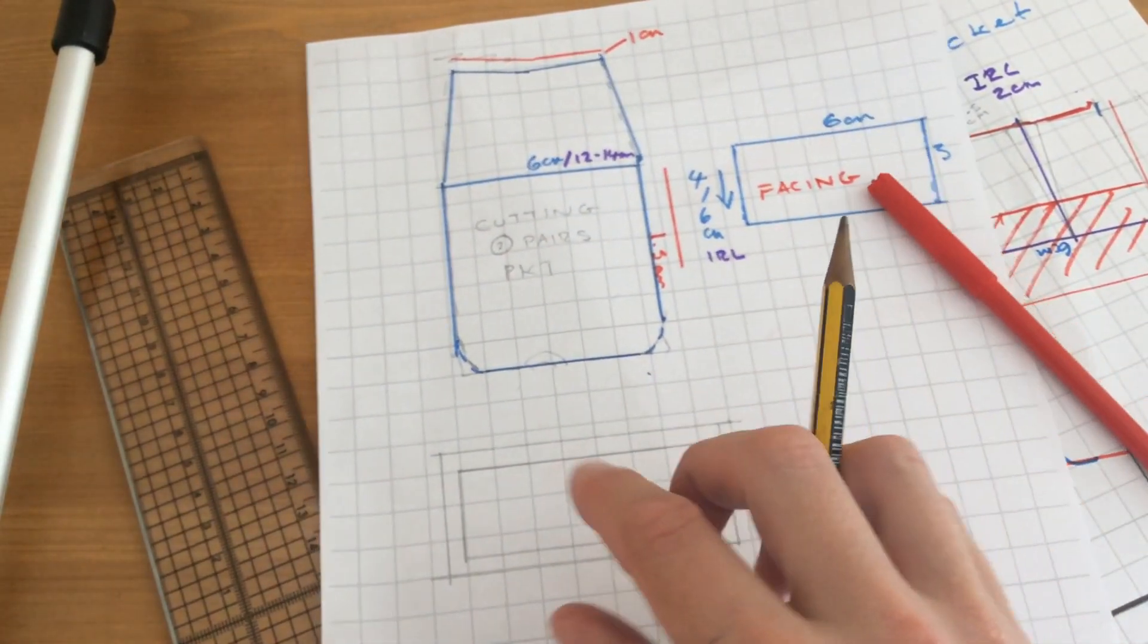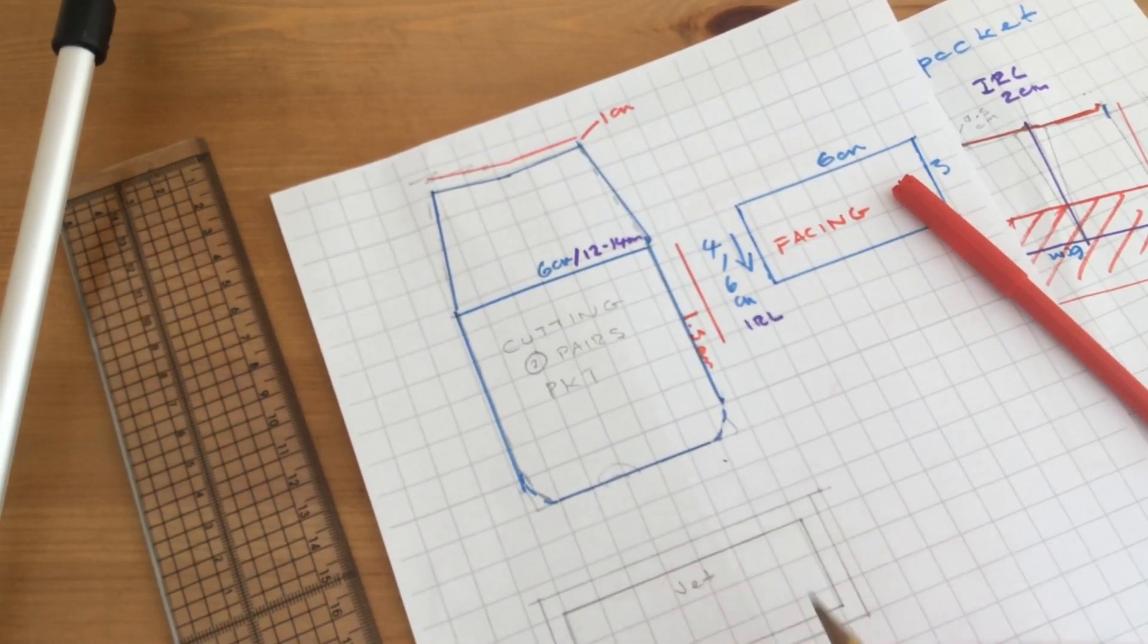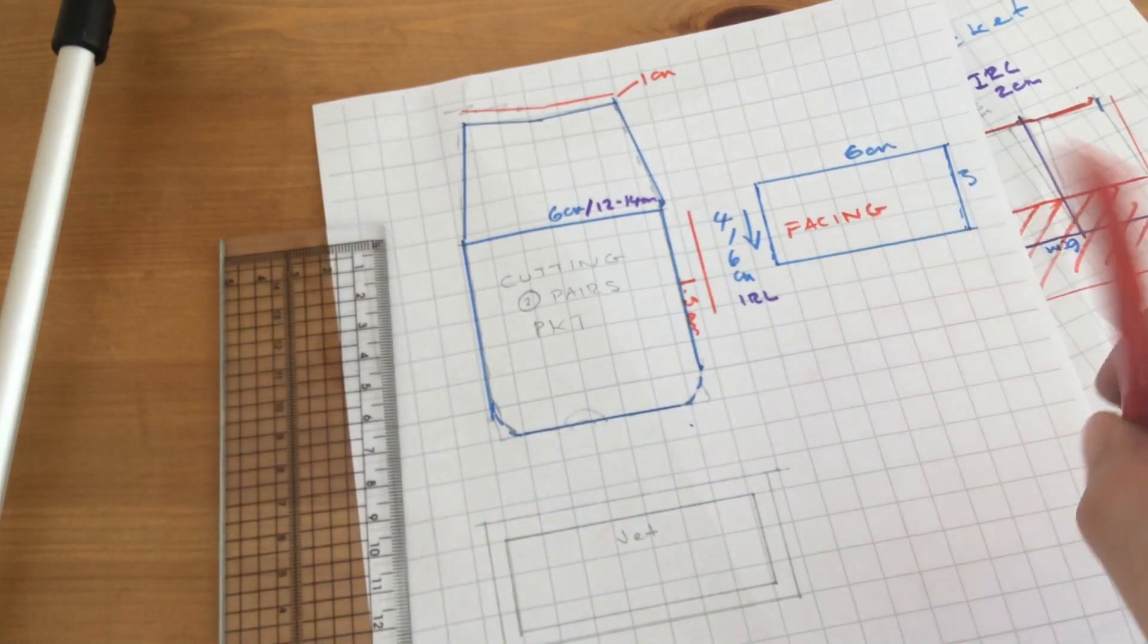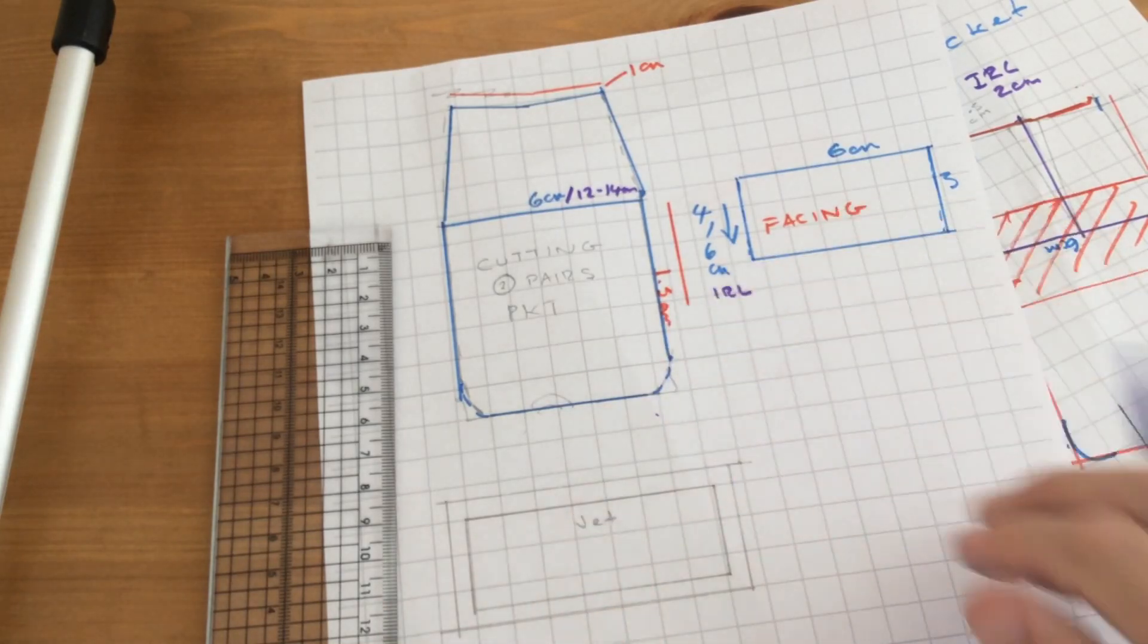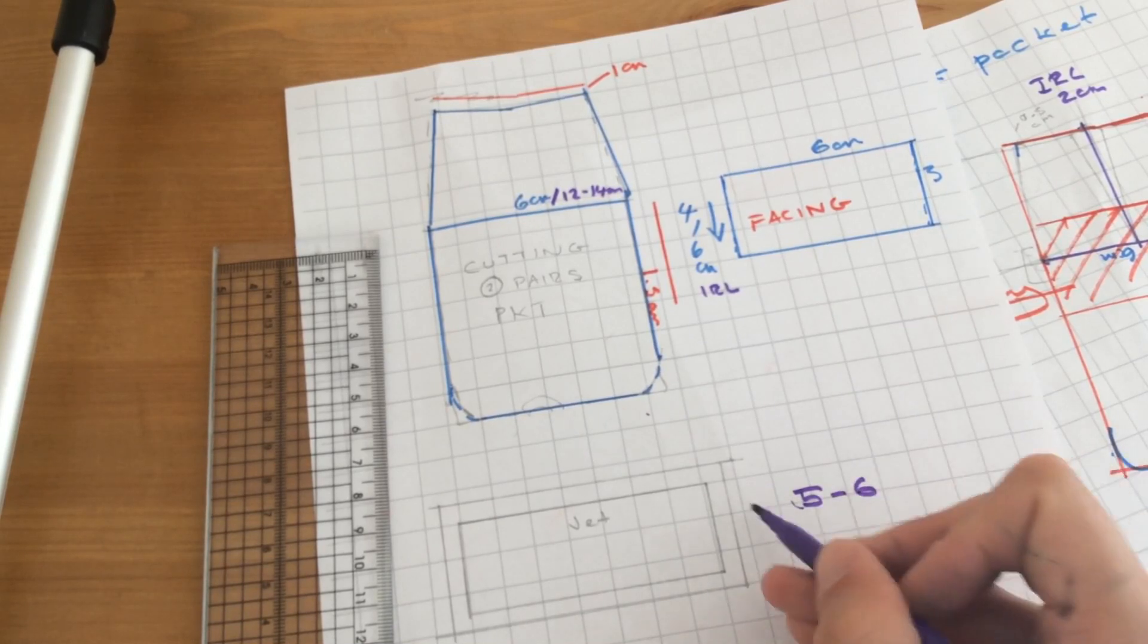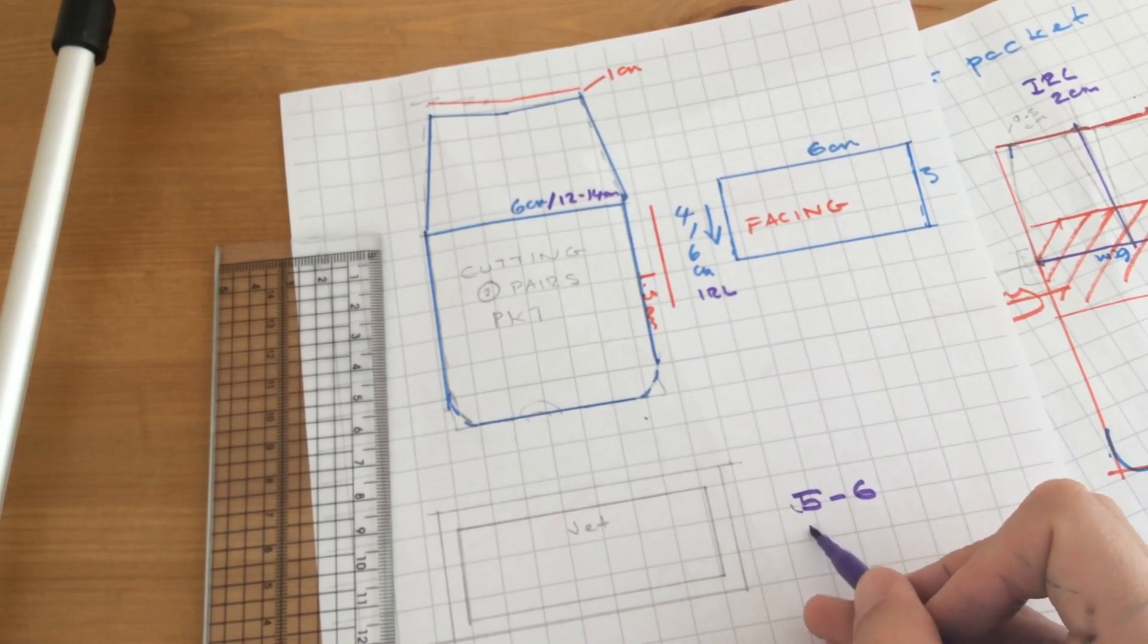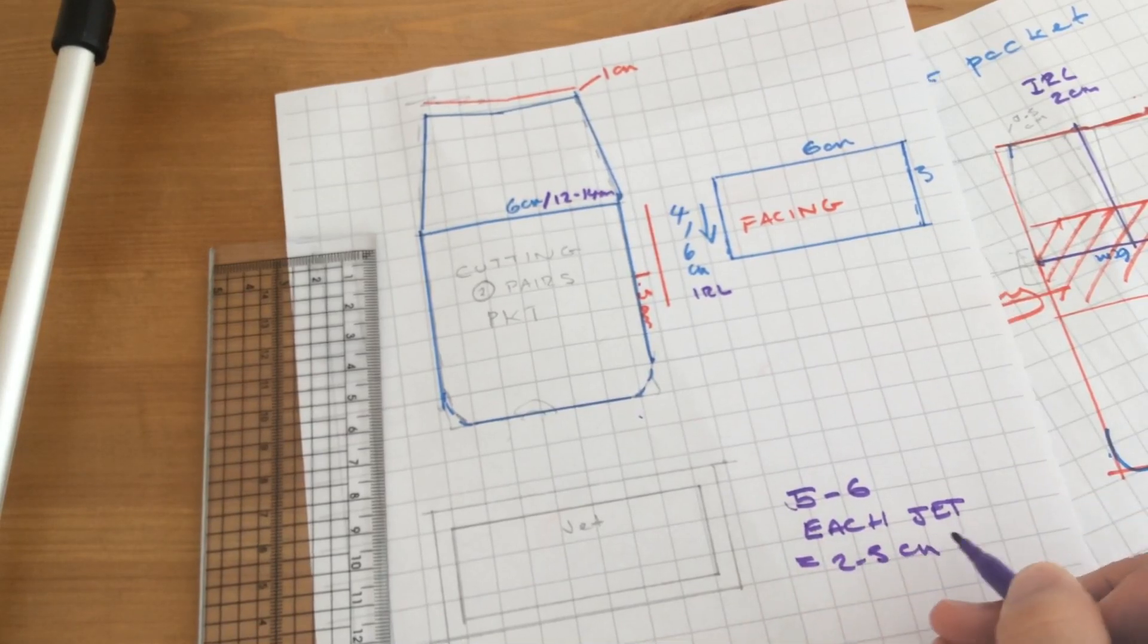We've got the facing, and now this piece here is the jet. And in real life, a jet can be as deep as you want it, but in real life for a pocket like this, the jet might be 5 to 6 centimeters deep. So each jet would be about 2.5 centimeters deep.